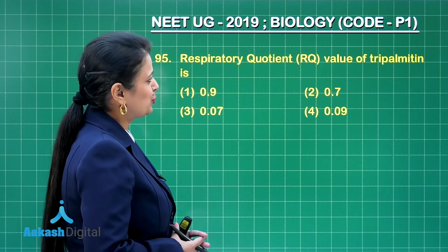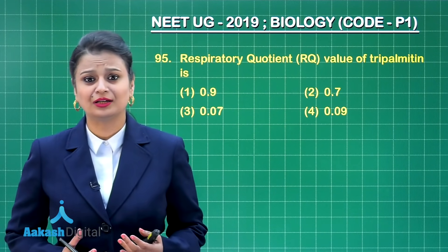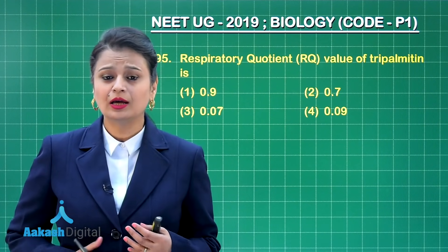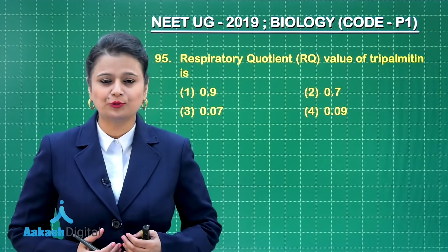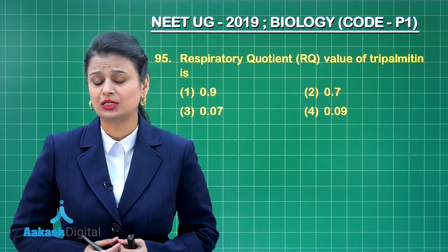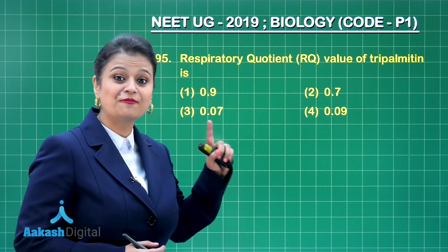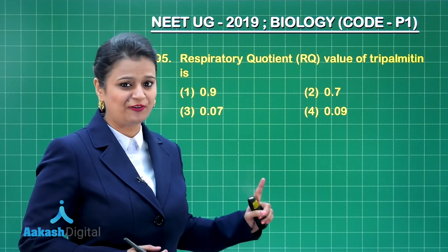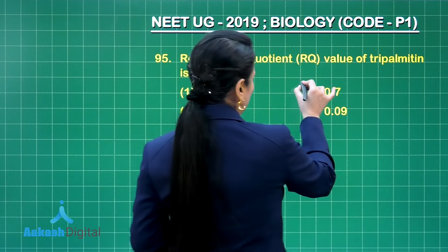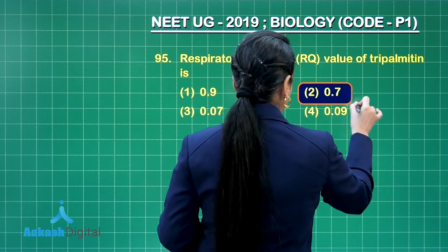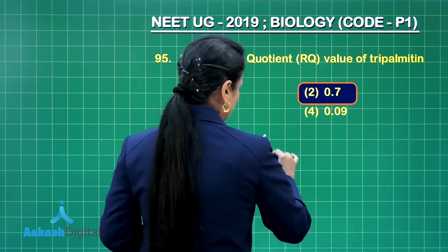The respiratory quotient value of tripalmitin? RQ is the amount of carbon dioxide released to the amount of oxygen consumed during respiration. Tripalmitin is a fat, and for fats this value is less than one — generally 0.7. So the right answer is option number two.